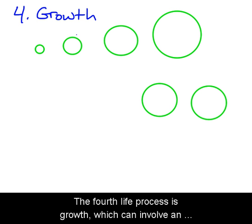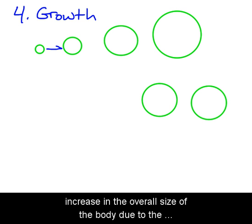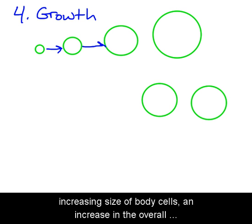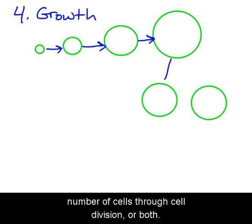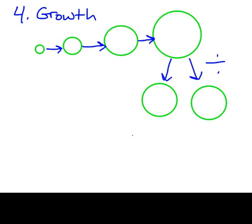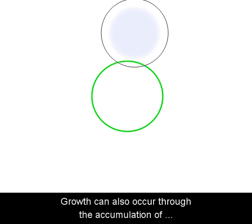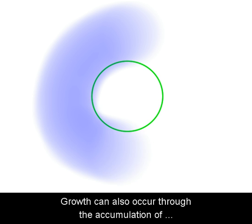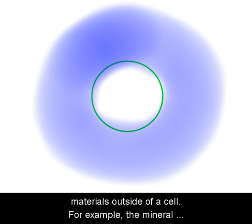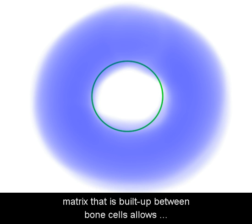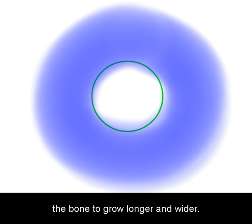The fourth life process is growth, which can involve an increase in the overall size of the body due to the increasing size of body cells, an increase in the overall number of cells through cell division, or both. Growth can also occur through the accumulation of materials outside of a cell. For example, the mineral matrix that is built up between bone cells allows the bone to grow longer and wider.